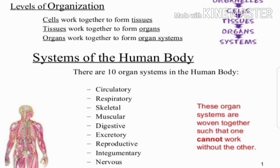Dear children, there are 10 organ systems in the human body. The first ones are: circulatory, respiratory, skeletal, muscular, digestive, excretory, reproductive, integumentary, nervous system, and endocrine system. These organ systems work together such that one cannot work without the others.